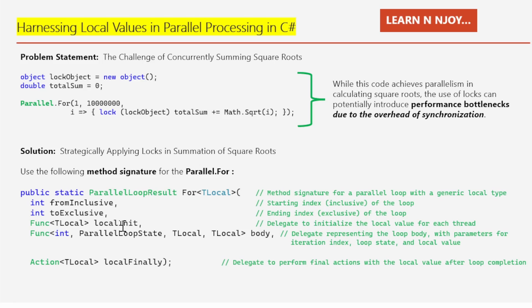In this method signature: fromInclusive is the starting index, toExclusive is the exclusive ending index. Func<TLocal> localInit is a delegate to initialize the local value for each thread. Func<int, ParallelLoopState, TLocal, TLocal> body is a delegate representing the loop body with parameters for iteration index, loop state, and the local value. Finally, the Action<TLocal> localFinally delegate performs the final action with local values after loop completion.